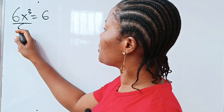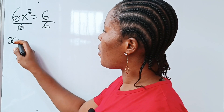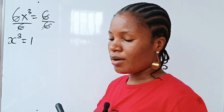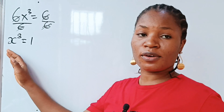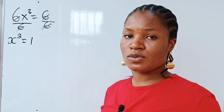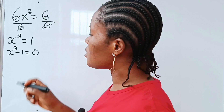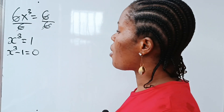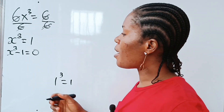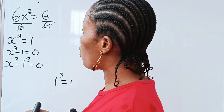So let's first divide 3 by 6. Now while we do that, we are going to have that x to the power of 3 is equal to 1.